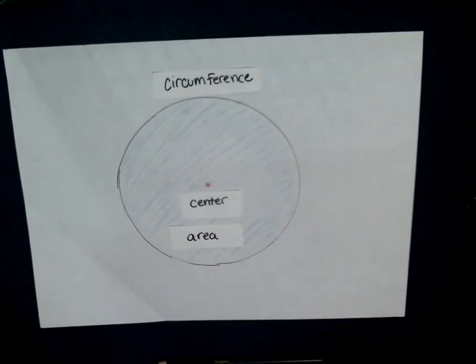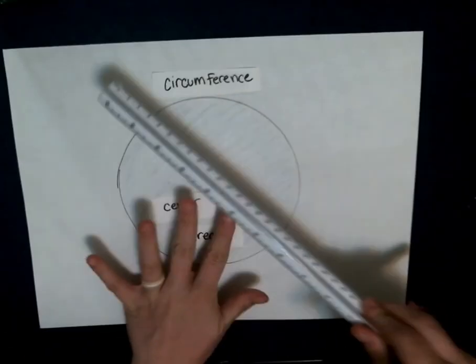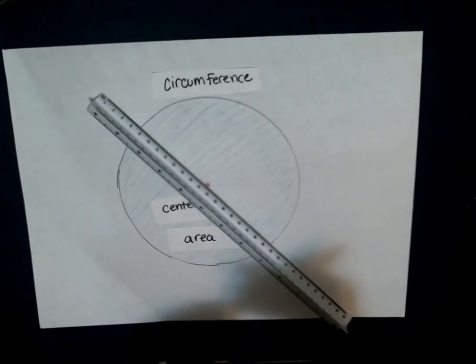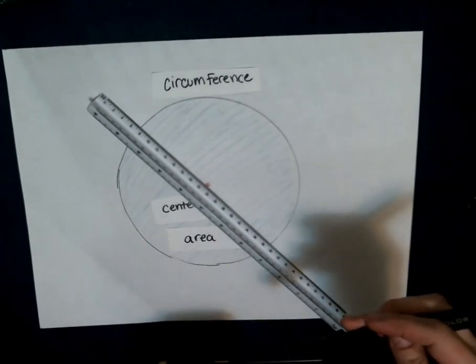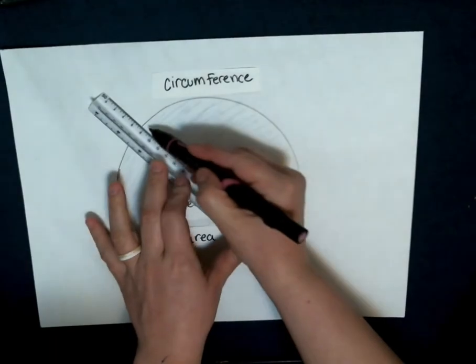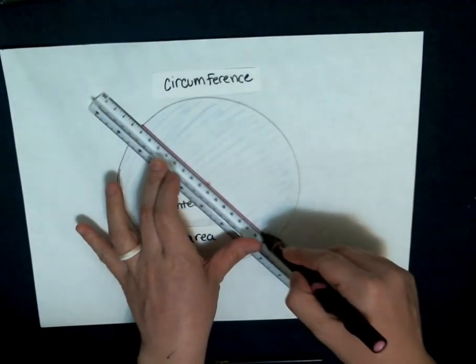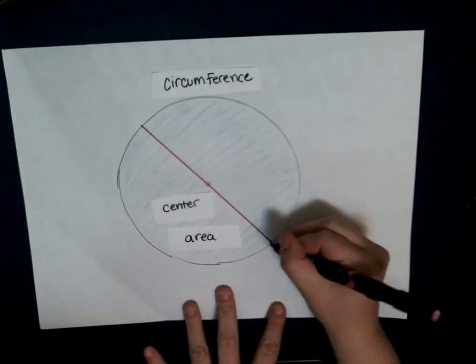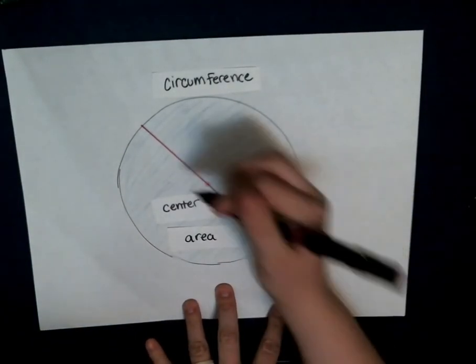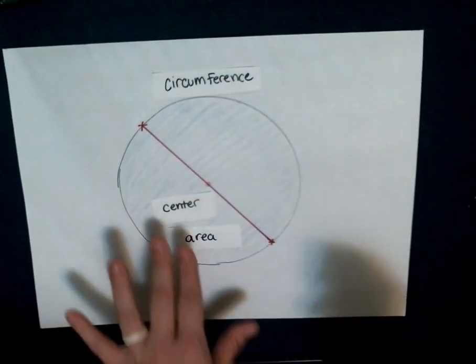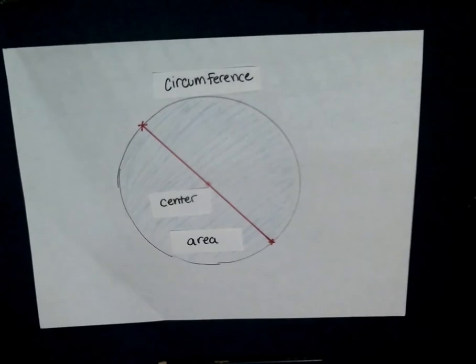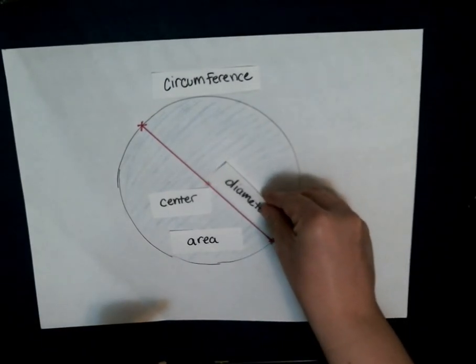I'm going to draw a special line. This special line is going to go through the center of the circle and touch two points of the circumference. It touches the circumference here and it touches the circumference here. There is a special name for this type of line. This type of line is called a diameter.